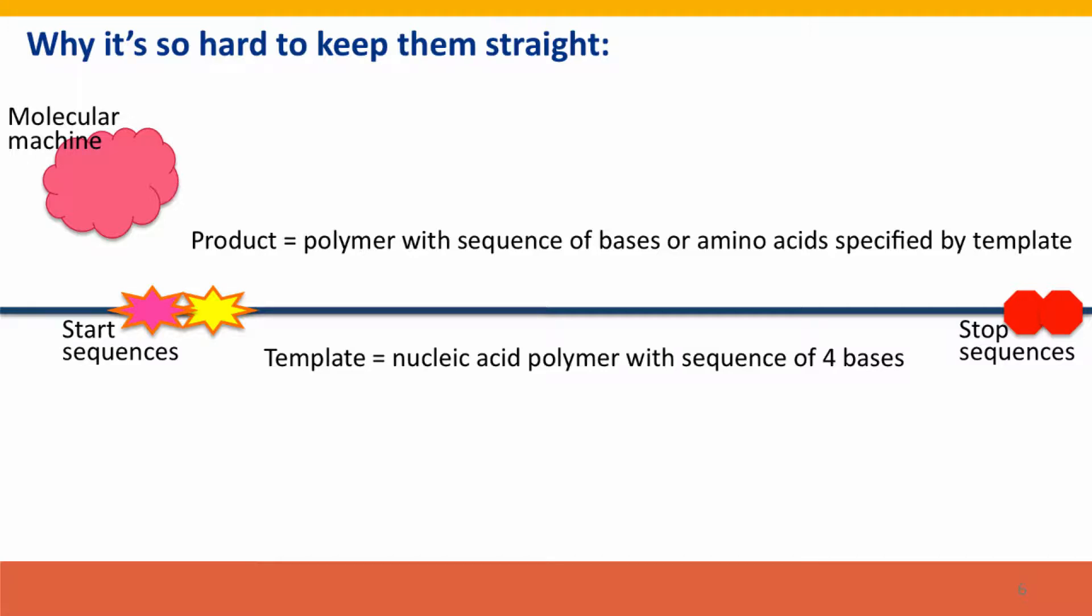So there is a template, which is in all cases a polymer of nucleic acids. It's a polymer and it has a sequence of some combination of the four bases. It could be the four DNA bases or the four RNA bases - AGCT if it's DNA, AGCU if it's RNA. The template has some sequences that say start here, and it has some sequences that say here's where you stop.